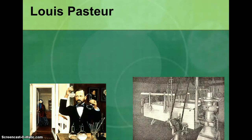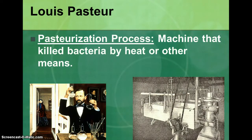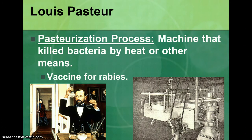Louis Pasteur created the pasteurization process, which is named after him. It is a process that kills bacteria by heat or other means. This was very important because during the Industrial Revolution people were living in very tight, crowded conditions — ten people in a room — with diseases spreading everywhere. A process to kill bacteria would save many lives. He also created a vaccine for rabies, which was a huge advancement in science.